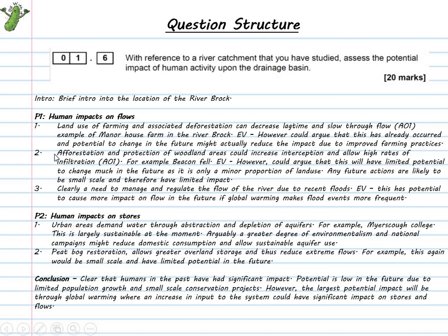I'm going to move on and talk about afforestation, protection of woodland areas, and how that might affect processes. For me, talking about the example of Beacon Fell. Again, evaluation in talking about the idea that this is very much a small proportion of the drainage basin and therefore having a minor impact on some of those processes. Within this paragraph on flows, I want to talk about management of discharge within the river, so to try and regulate flow to reduce the risk of flooding. Again, potential into the future—maybe we'll need to manage the River Brock more as global warming will make discharge a lot more difficult to predict and possibly more flashy, with extreme high peak discharges.